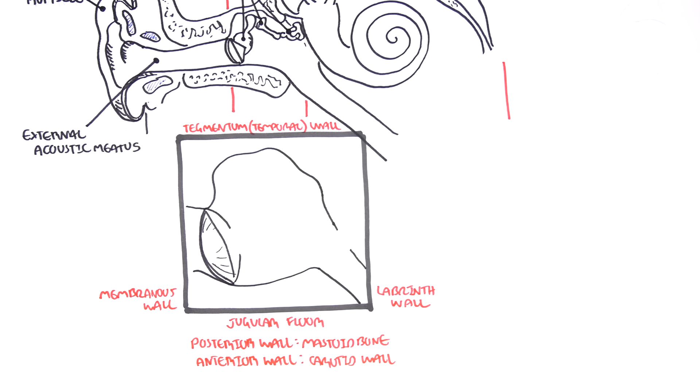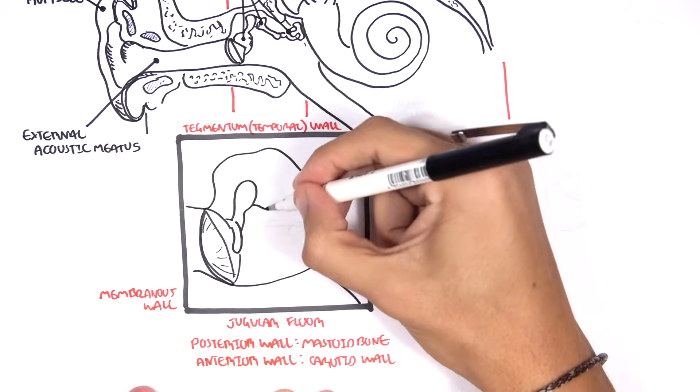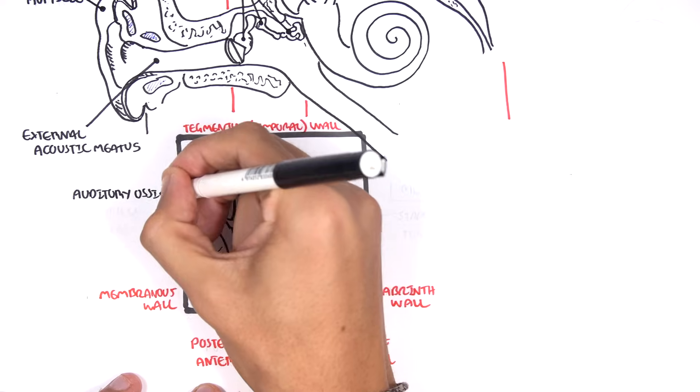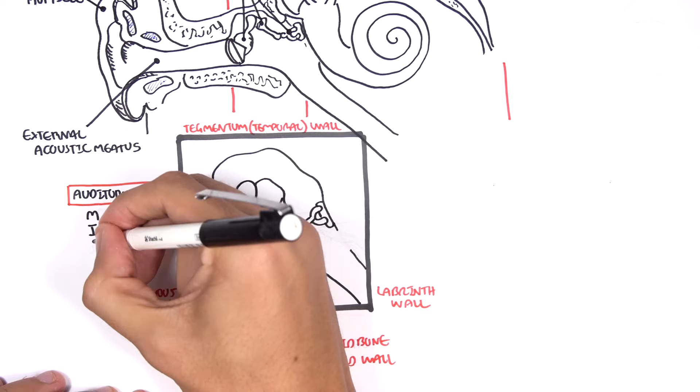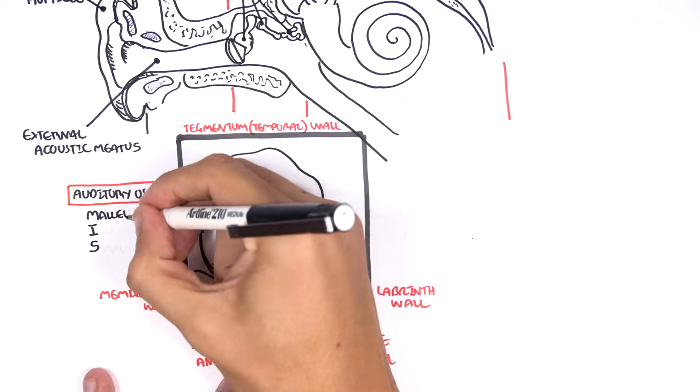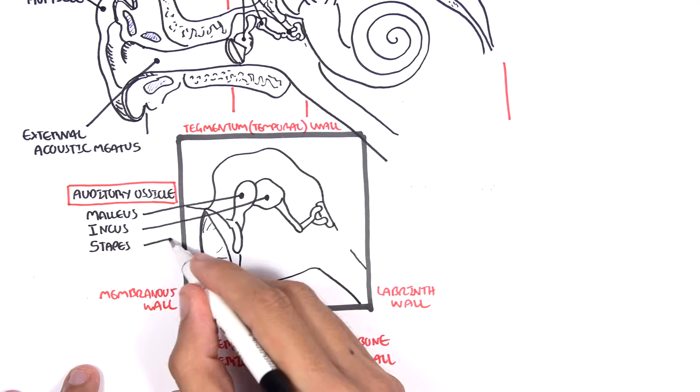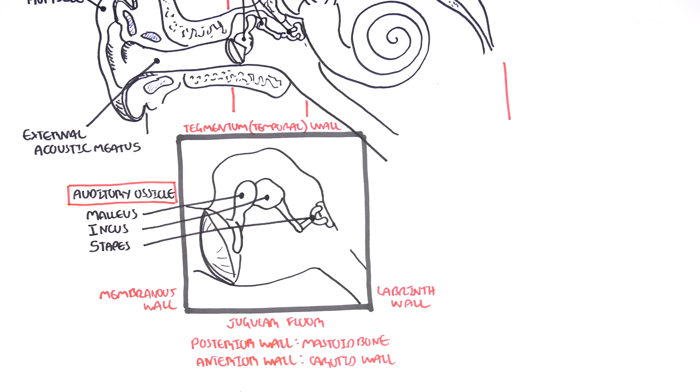Now the content of the middle ear as I mentioned earlier are your auditory ossicles which are made up of three bones. These are the smallest bones in your body and these are your malleus, incus and stapes. The stapes bone interacts with the inner ear through the oval window.